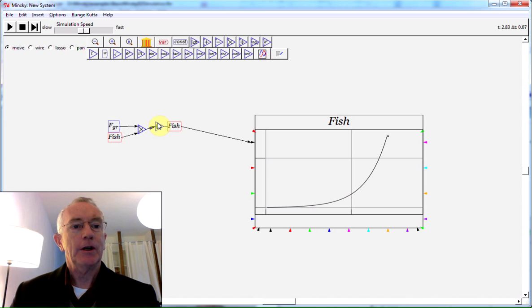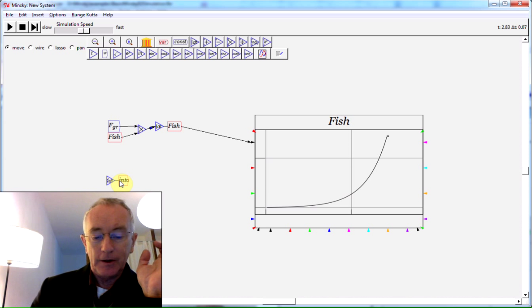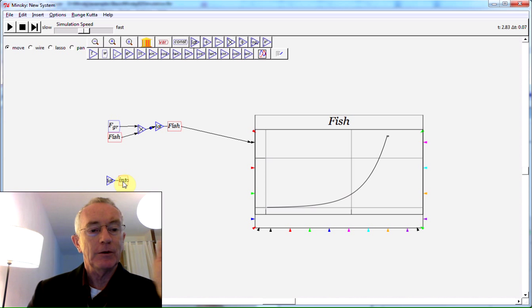Now let's add sharks to this. We're trying to use as many keyboard shortcuts as possible. If I type the ampersand key, which is the integral key - we're using key characters in the same sense that Mathcad does. If you type the ampersand key in Minsky, that gives you an integral block.